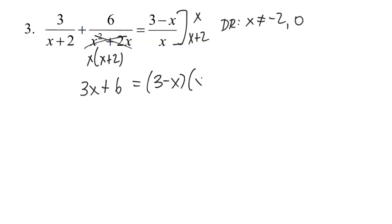leaving me with 3 minus x times x plus 2. And I'm going to put both of those in parentheses, because here in a second, I am going to FOIL them out. Okay, so that's what I'm ready to do now, 3x plus 6 is equal to 3 times x, which is 3x, 3 times 2, which is 6, negative x times x, which is negative x squared, and negative x times 2, which is negative 2x.